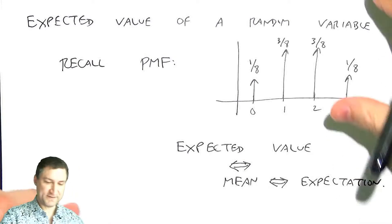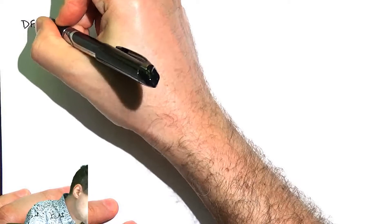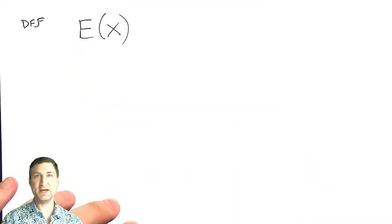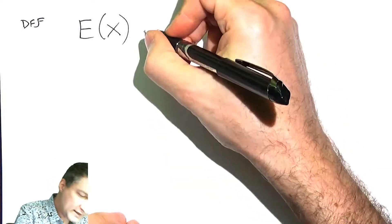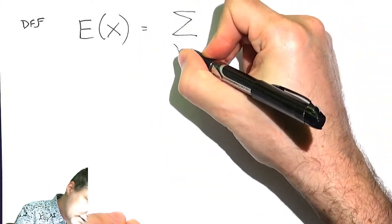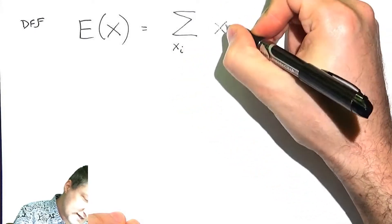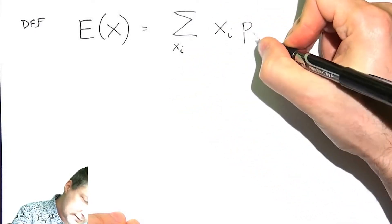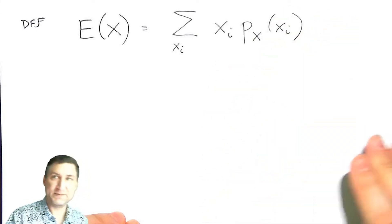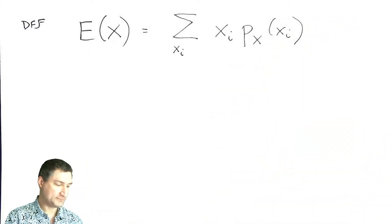Okay, so how is this defined? So the definition, and you're going to see this notation, E of X. So big E, big X, X is some random variable. It's basically the sum over all the possible values that this random variable can assume, the value times the probability of getting that value.